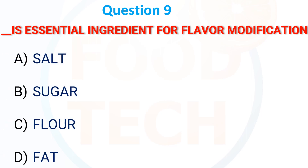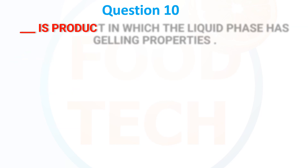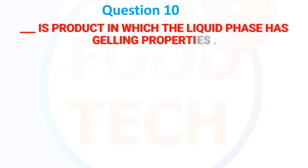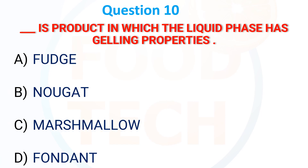Options: A) Salt, B) Sugar, C) Flour, D) Fat. The answer is Salt. Dash is a product in which the liquid phase has a jelly property: A) Fudge, B) Nugget, C) Marshmallow, D) Fondant. The answer is C) Marshmallow.